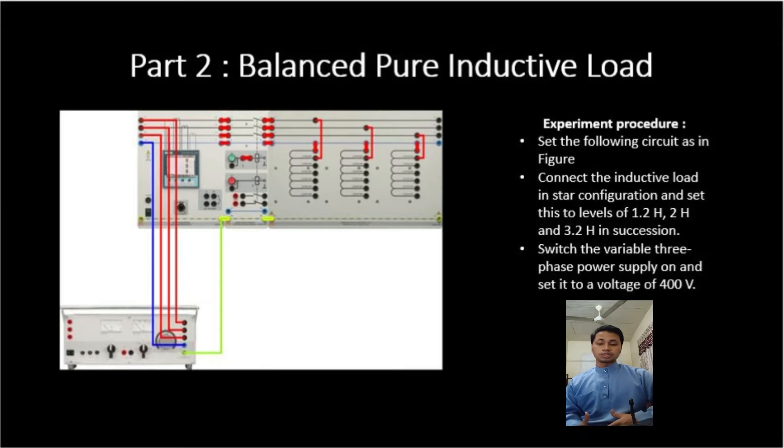My name is Ali Murshidi bin Anwar and today I am going to continue for part 2 balanced pure inductive load. For the experiment procedure, set the following circuit as in Figure 2 and then connect the inductive load in star configuration and set this to level of 1.2H, 2H and 3.2H in succession.